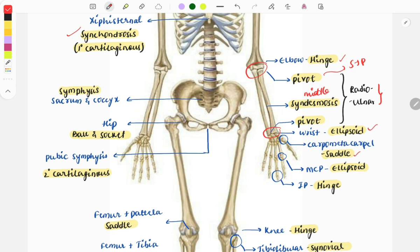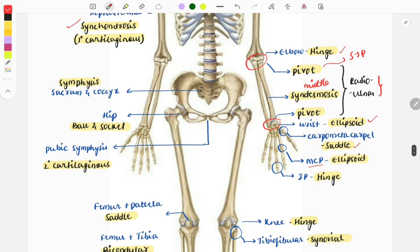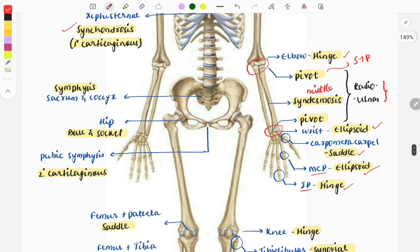The joint of the metacarpophalangeal is of the ellipsoid variety, and the joint between the phalanges, that is the interphalangeal joint, is a hinge joint. Moving on to the joints of the lower limb.